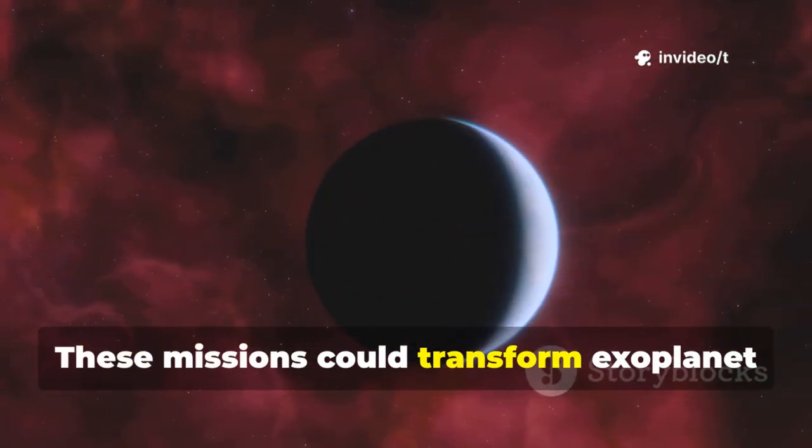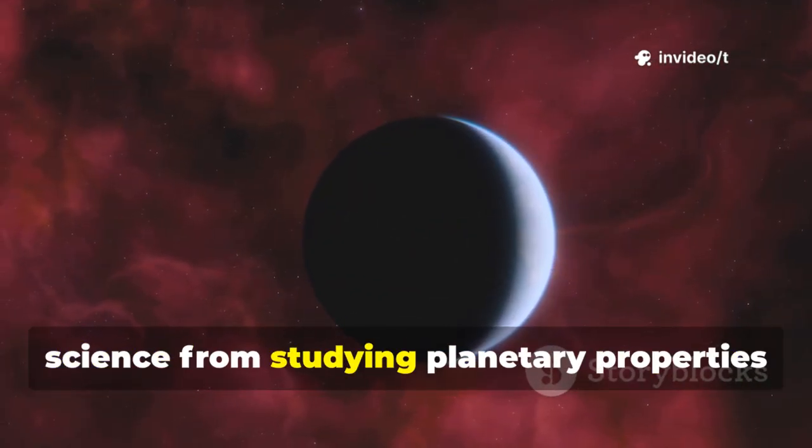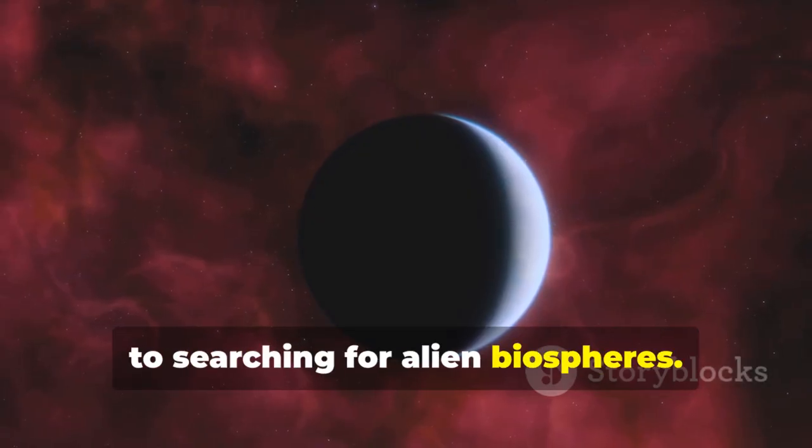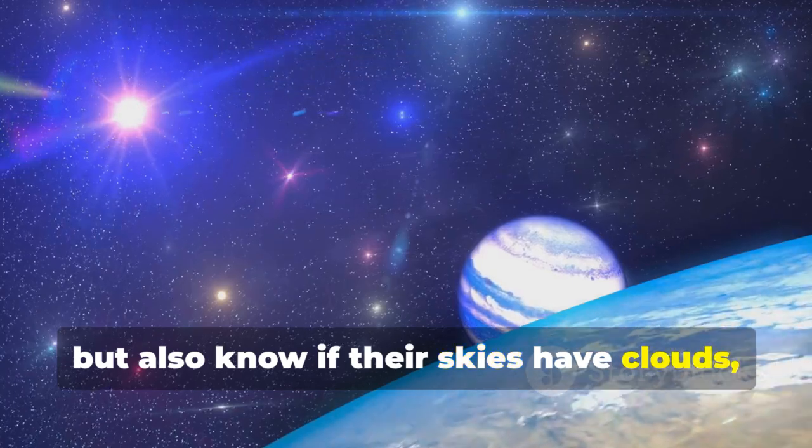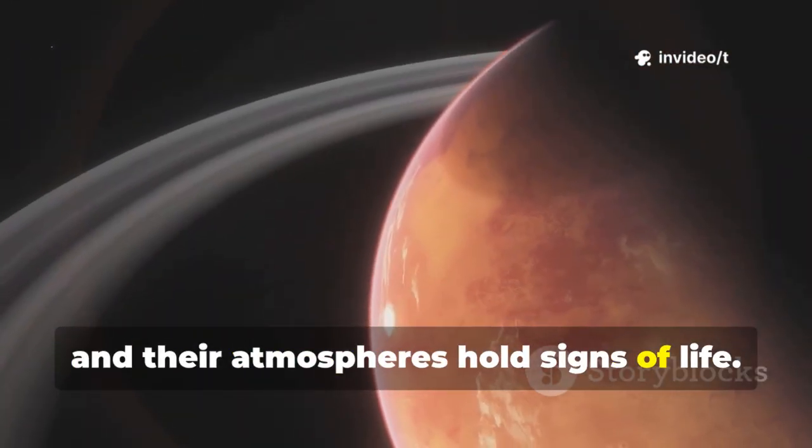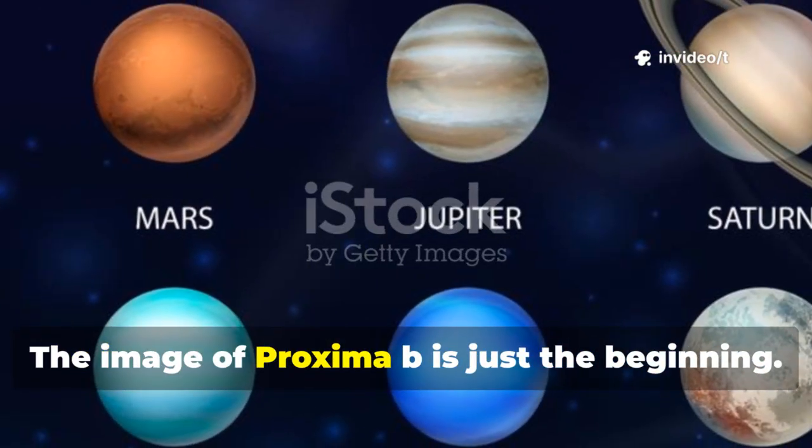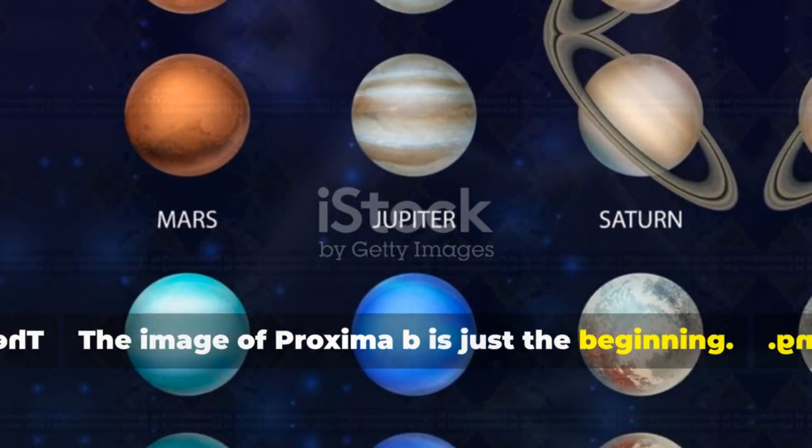These missions could transform exoplanet science from studying planetary properties to searching for alien biospheres. Within decades, we may not only see other rocky worlds but also know if their skies have clouds, their surfaces have oceans, and their atmospheres hold signs of life. The image of Proxima b is just the beginning.